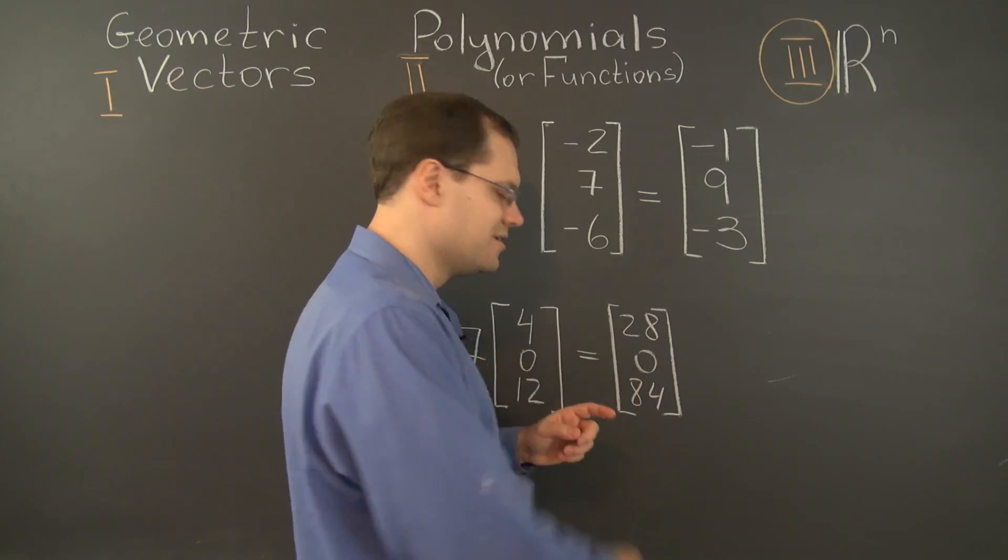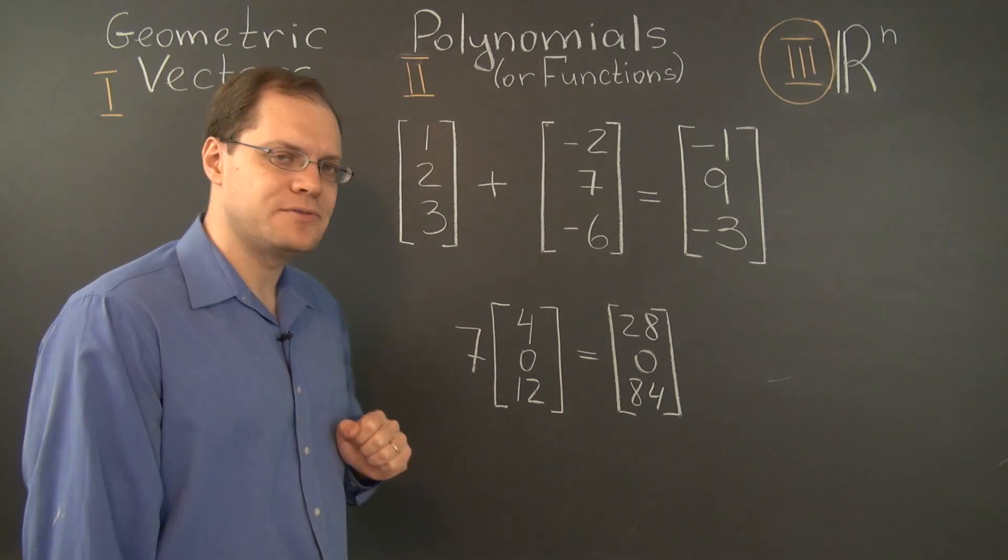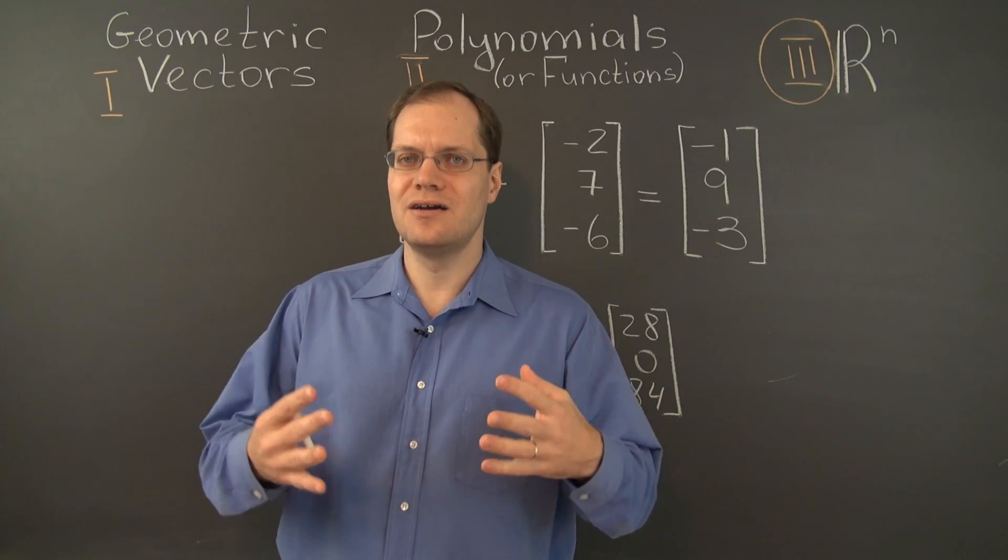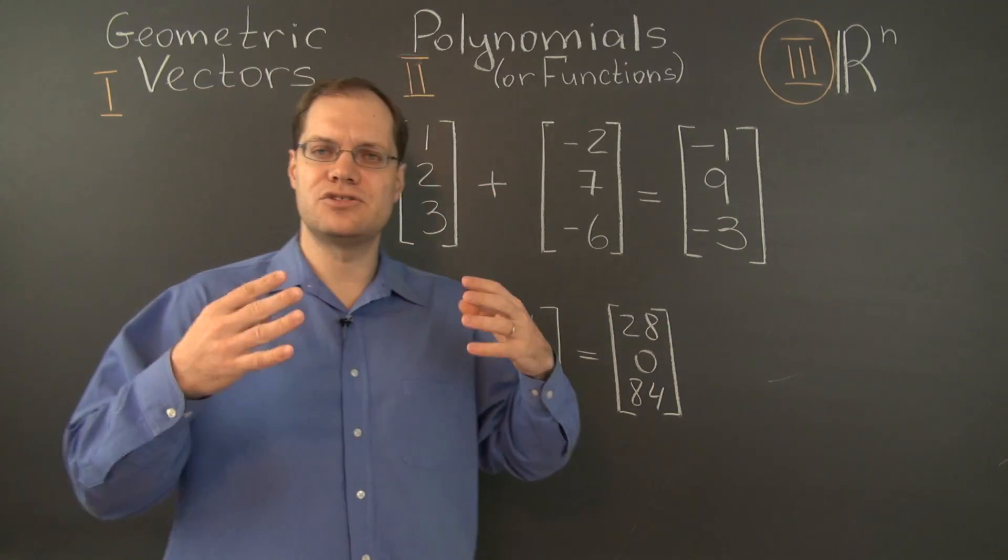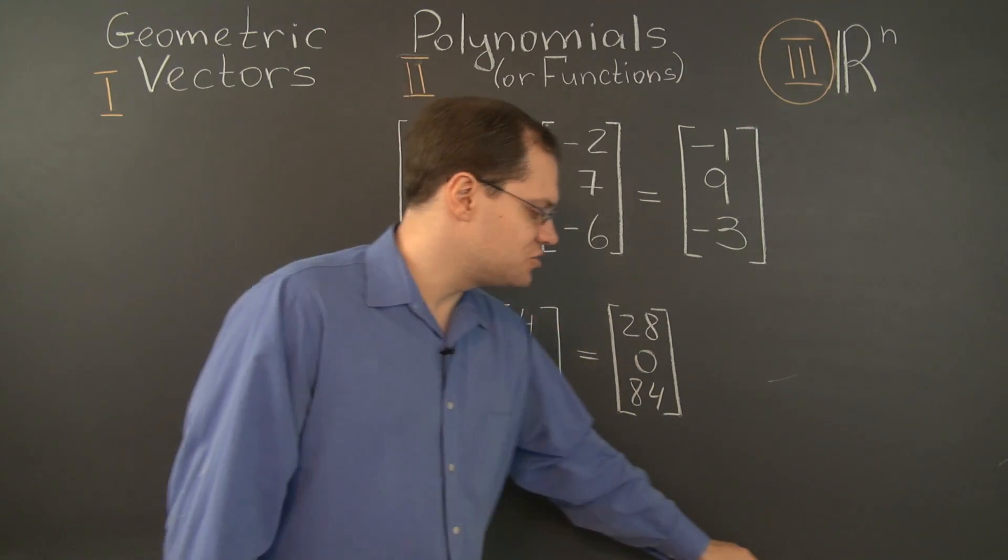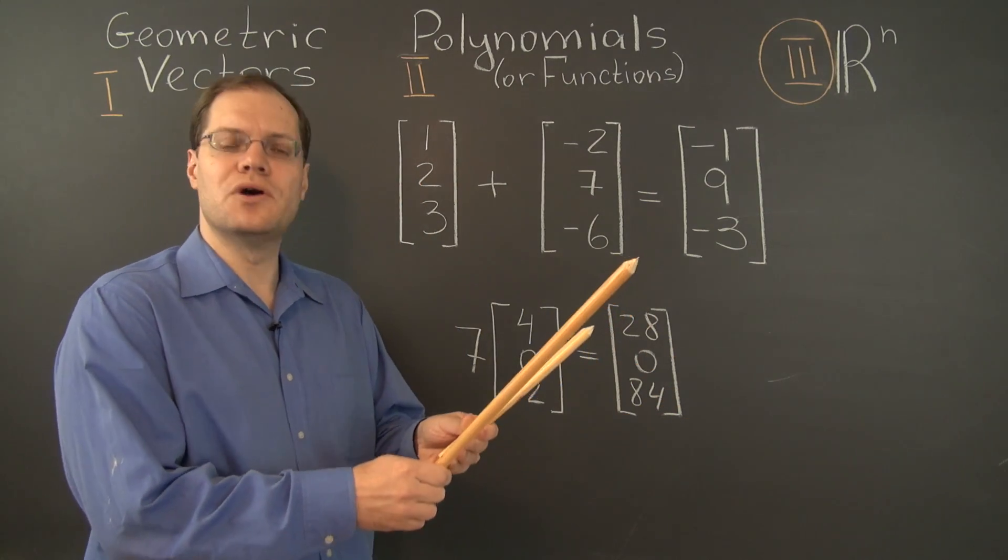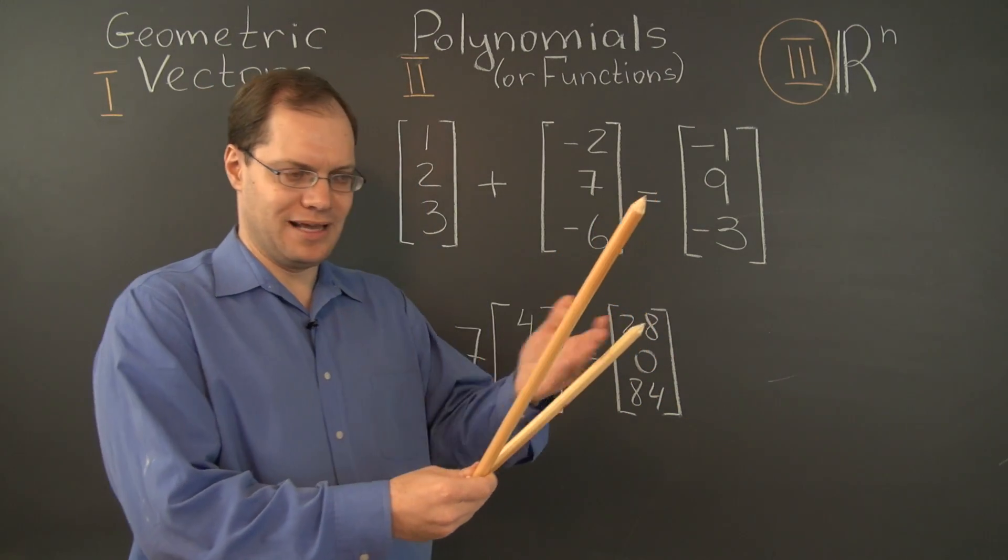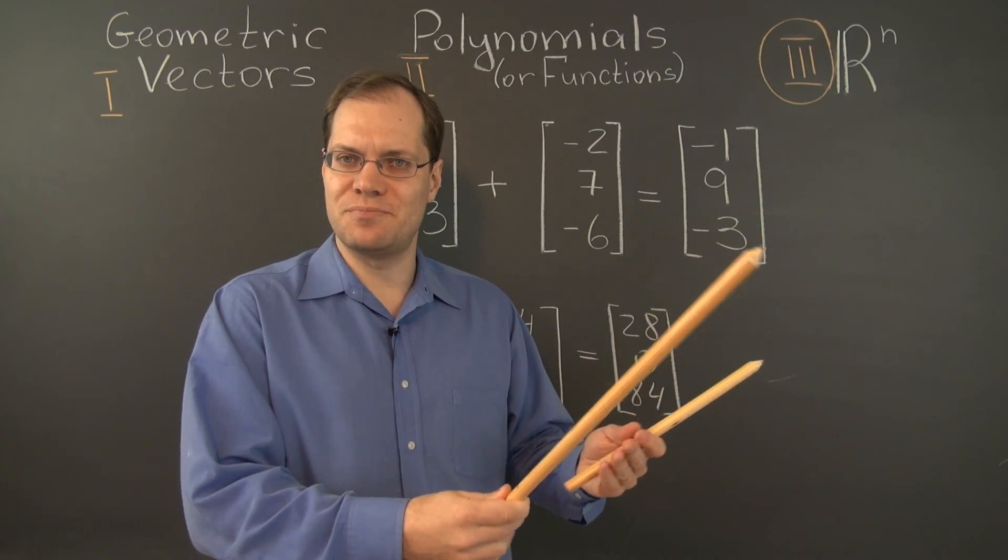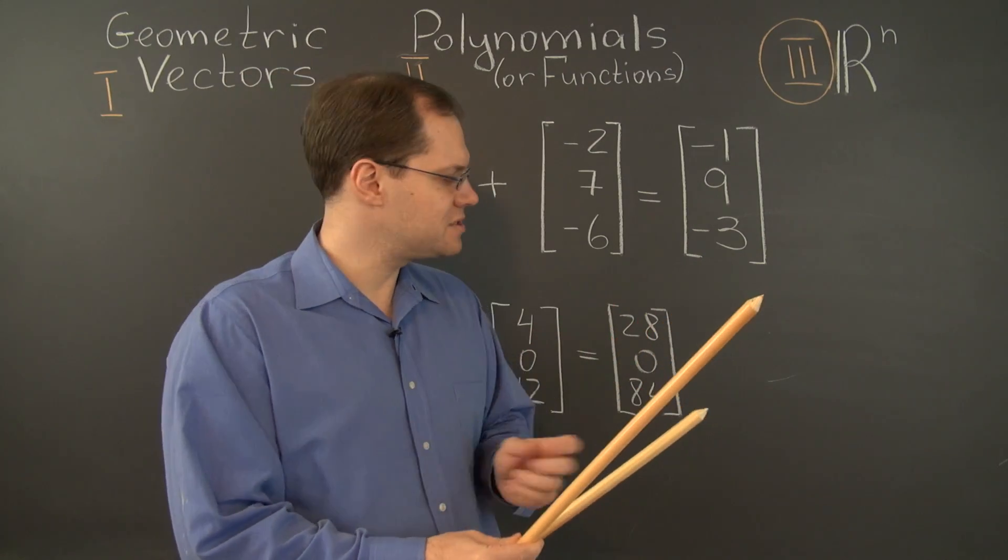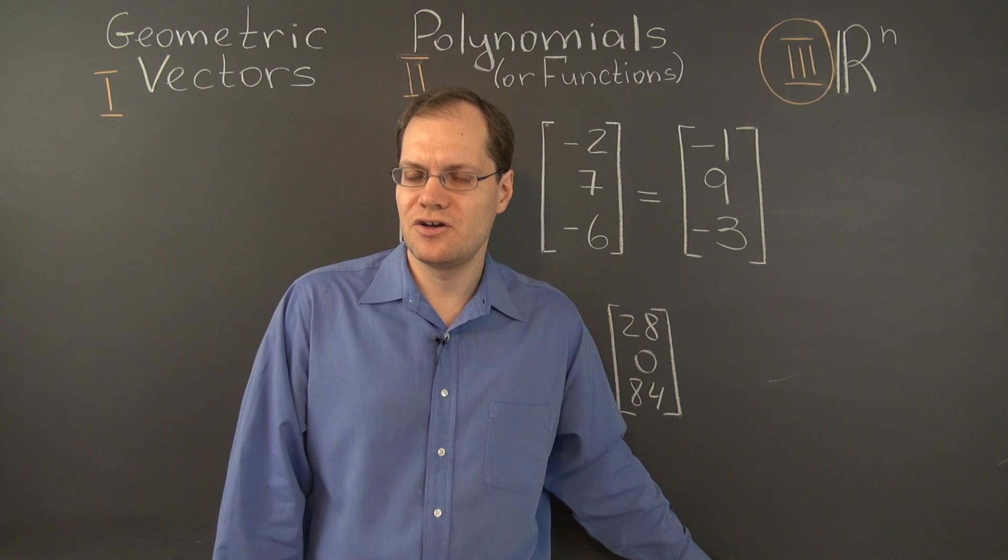84 is 28 times 3. So we're stuck within that set where the last entry is three times the first entry. By geometric analogy, we will call that a subspace. Just like a plane is a subspace of the entire space, this we will also call a subspace of R^3.